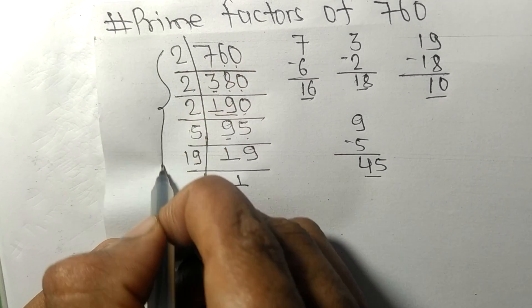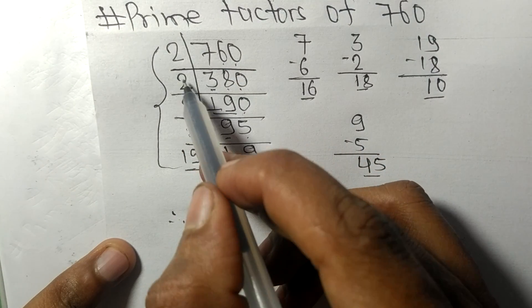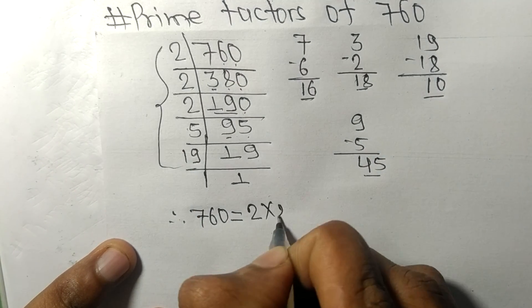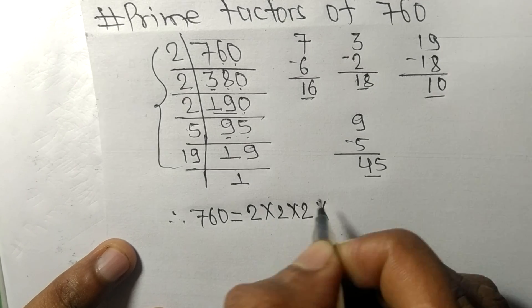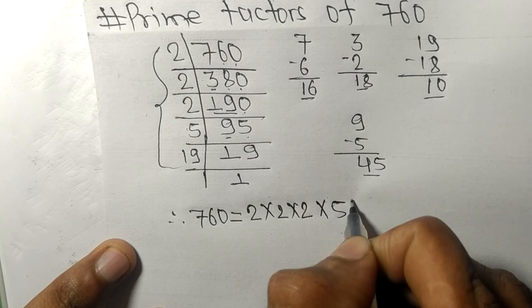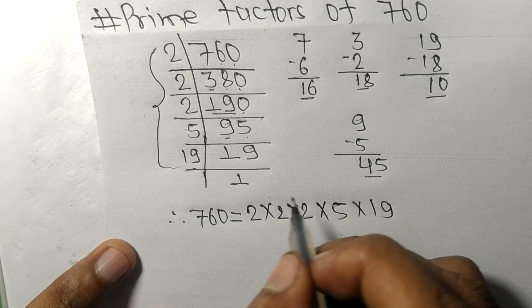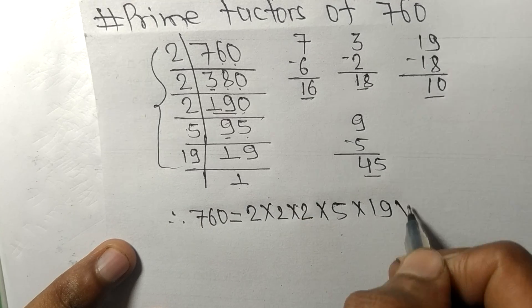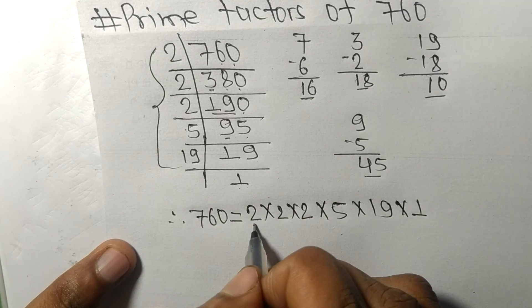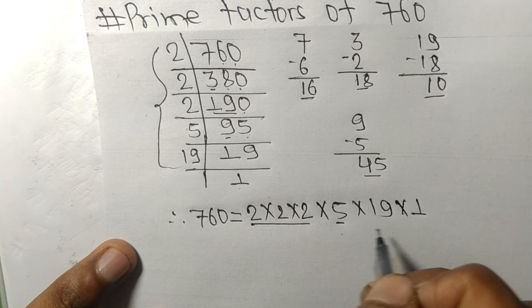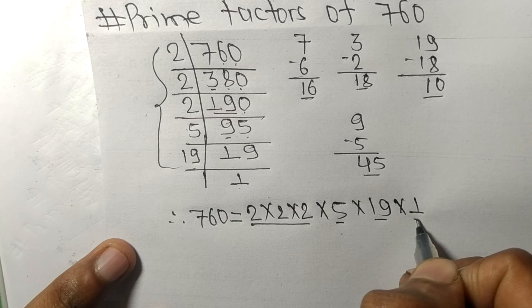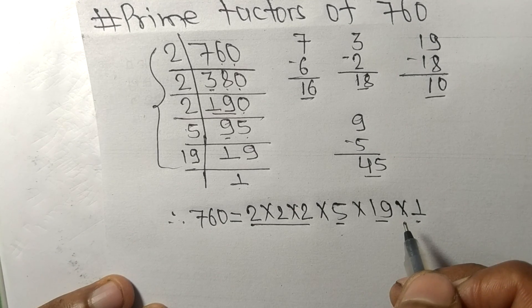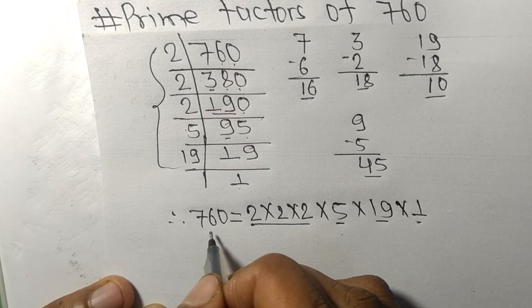Therefore, 760 is equal to, from this side, 1, 2, 3 times 2, so 1, 2, 3 times 2, 5, and 90. And from this side we get 1, so 2, 5, 19, and 1 are the prime factors of 760.